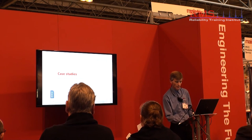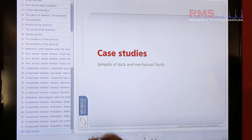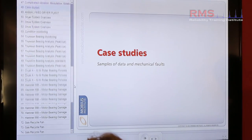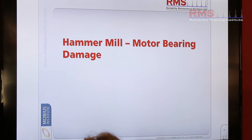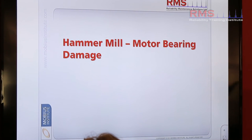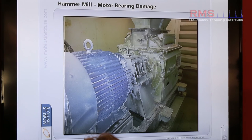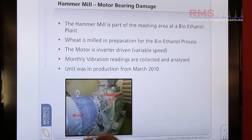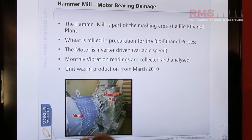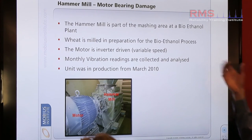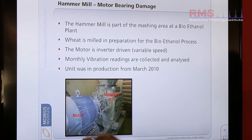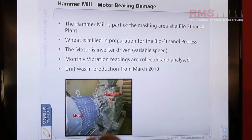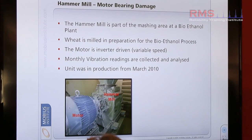We've got some case studies here. This is a hammer mill bearing on a particular bearing on a motor — there's the actual drive itself. So this mill crushes or mashes wheat in preparation for a bioethanol fuel producing process. Variable speed motor, so it varies in speed during operation.